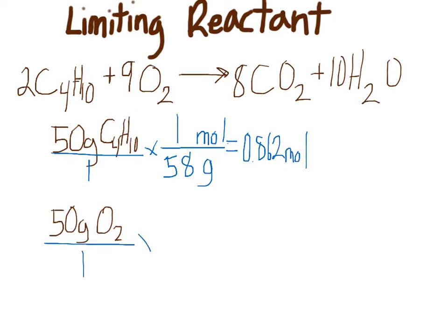Same down here, one times grams, moles at the top, and one mole. How many grams are there? So the molar mass of oxygen is going to be 32. So 50 divided by 32 is going to be 1.56 moles.